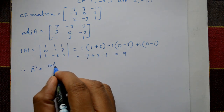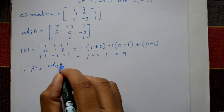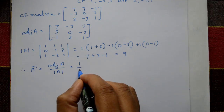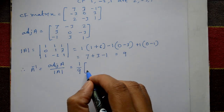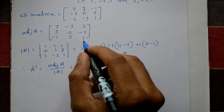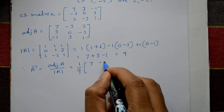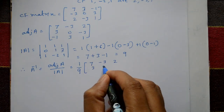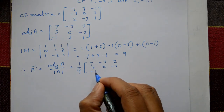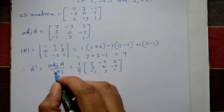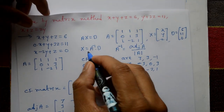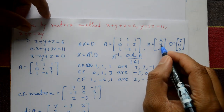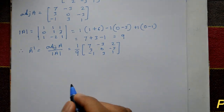Therefore, inverse of A is equal to adjoint of A divided by determinant of A, which is 1/9 into [7, -3, 2 / 3, 0, -3 / -1, 3, 1]. This is the inverse of A. Now we need x equals inverse of A into D.